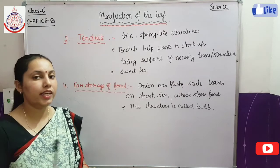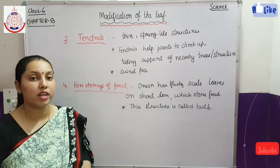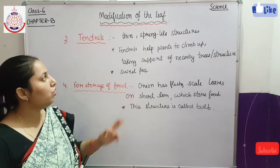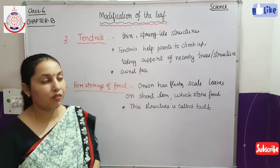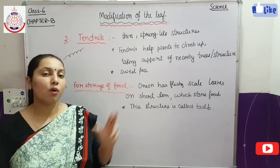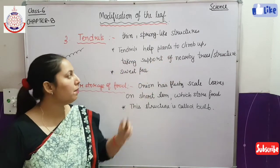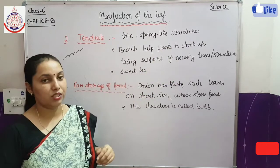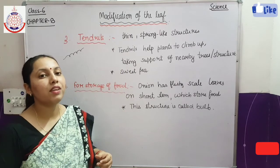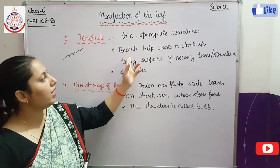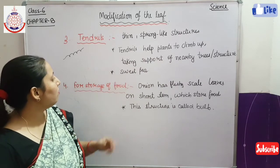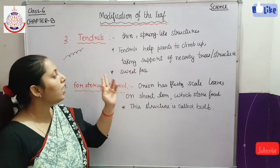The next modification is tendrils. About tendrils, we have also studied this in the modification of stem. What are tendrils? Tendrils are thin spring-like structures. Some of these kinds of structures are developed in the leaves. What do they do? Tendrils help the plants to climb up, taking the support of a nearby tree or structure. Which plants need tendrils? Plants that have very weak stems need tendrils. An example of this type of tendrils developed in leaves is sweet pea.